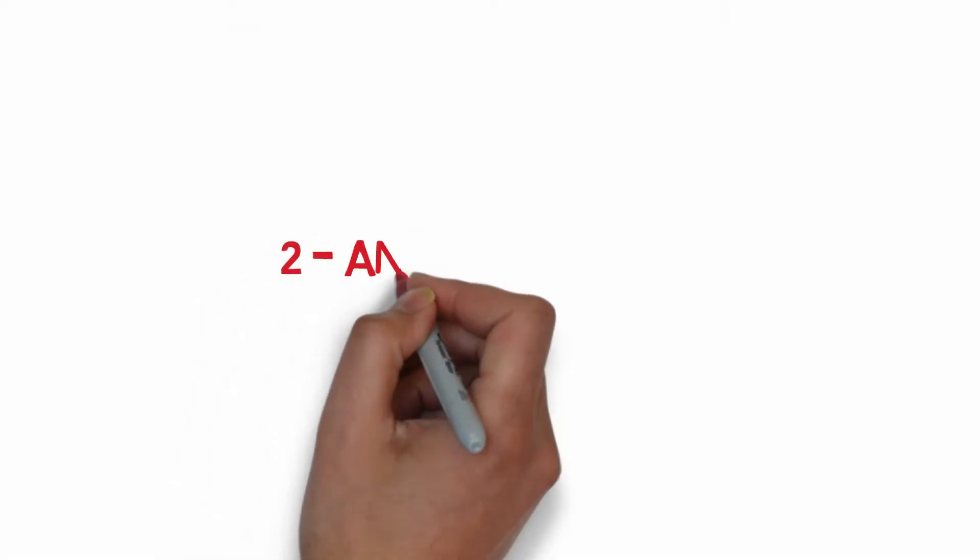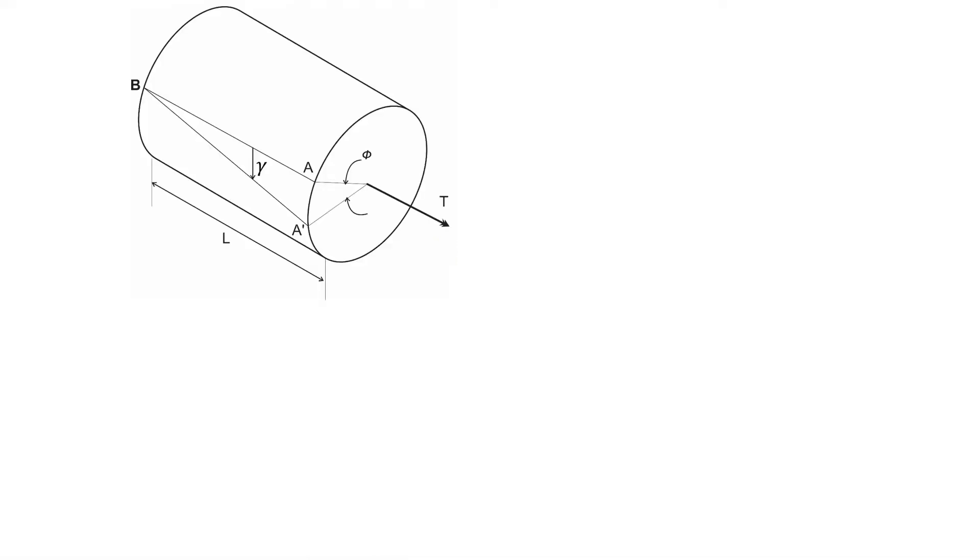The second topic that we are going to study is determination of angle of twist. Consider a circular shaft of radius C subjected to a positive torque.